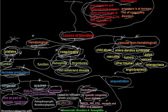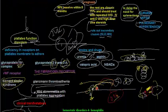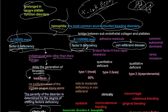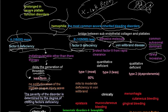Now we're going to talk about von Willebrand disease, and in the next video I'm going to talk about thrombosis diseases. Von Willebrand disease is autosomal dominant — it is not X-linked, just autosomal dominant. Von Willebrand factors are molecules that play a role in adhesion of the platelets to the endothelial layer of the blood vessels.